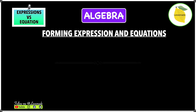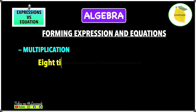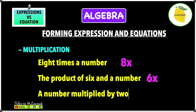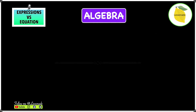Now let's look at forming expressions in multiplication. For '8 times the number they're thinking of,' the number is x and you multiply by 8, giving 8x. 'The product of 6 and a number' means multiplying 6 and x, giving 6x. 'A number multiplied by 2' — the number is x — gives 2x.